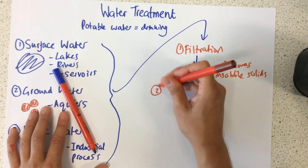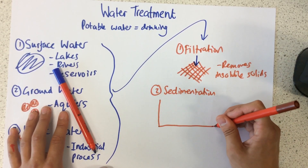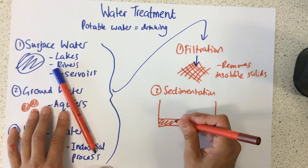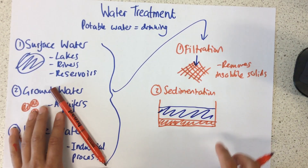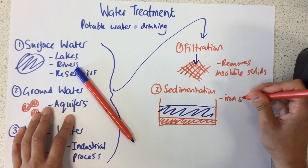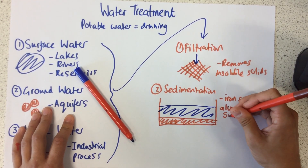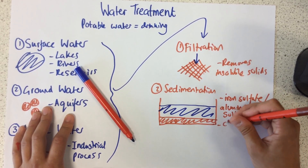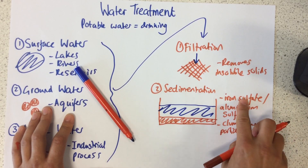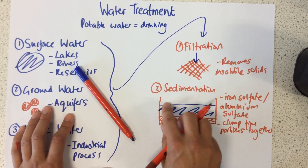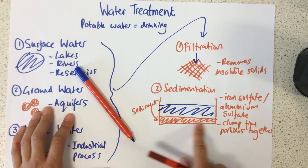What happens next is a process called sedimentation. Sedimentation involves forming a sediment at the bottom. In order to do that, you need to add iron sulphate or aluminium sulphate. These two substances clump fine particles together — they react with fine particles within the water and form this sediment at the bottom. So we've now removed the larger insoluble things and the smaller particles as well.